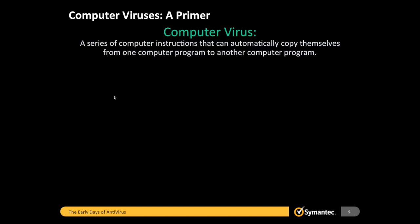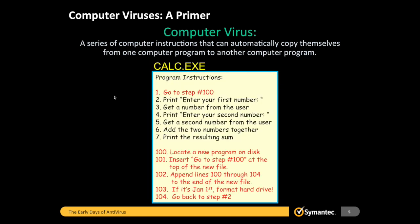So what is a computer virus? A computer virus is a series of computer instructions that can automatically copy themselves from one computer program to another. It's that simple — a set of instructions that copy themselves. They're self-replicating. Here we have our calculator program in black — those are the legitimate instructions. The red lines are instructions that are part of a computer virus that was somehow added to the original calc program. A computer virus actually infects a legitimate program — it adds itself on.